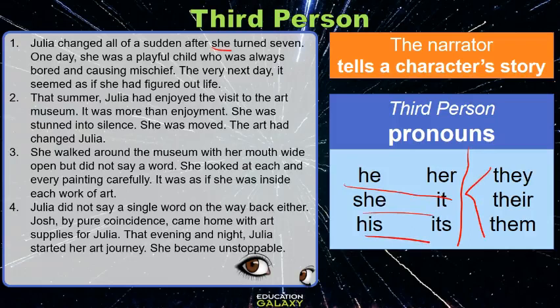You see 'she' here — this is an example of a third person singular pronoun. And you also see the pronoun 'her.' It tells you about the character of Julia from a different person's point of view. Julia changed all of a sudden after she turned seven. One day she was a playful child who was always bored and causing mischief. The very next day it seemed as if she had figured out life. That summer, Julia had enjoyed the visit to the art museum. It was more than enjoyment — she was stunned into silence. She was moved. The art had changed Julia.